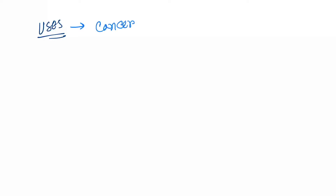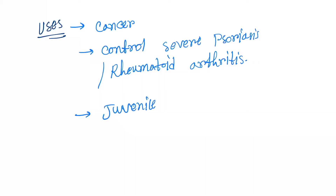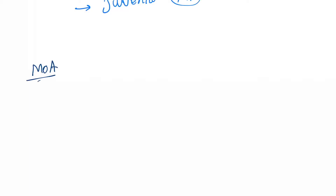Next we'll discuss the uses of this drug. It is used to treat certain types of cancer, to control severe psoriasis, or rheumatoid arthritis. The dose is different for cancer versus rheumatoid arthritis. It may also be used to control juvenile rheumatoid arthritis.